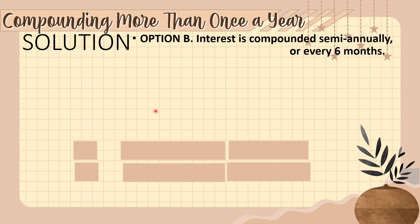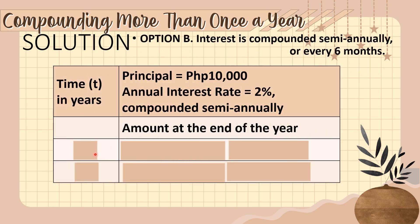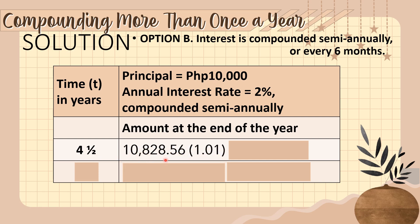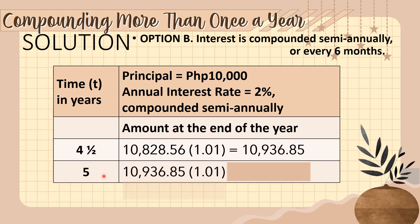Continuing with Option B to the fifth year: at four and a half years, 10,828.56 times 1.01 gives 10,936.85. And on the final year, 10,936.85 as the principal multiplied by 1.01 gives us 11,046.22.